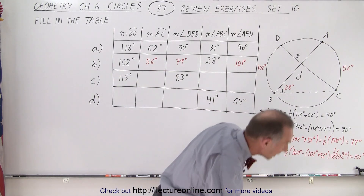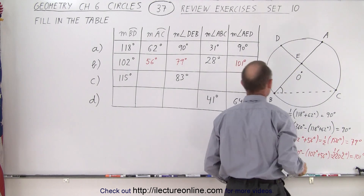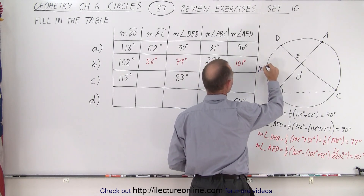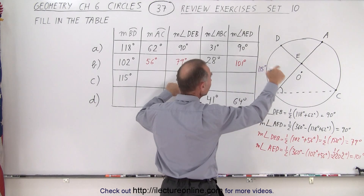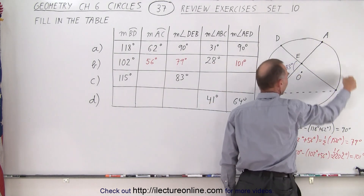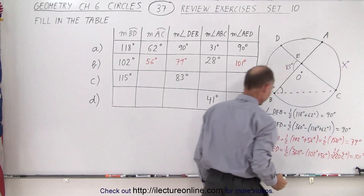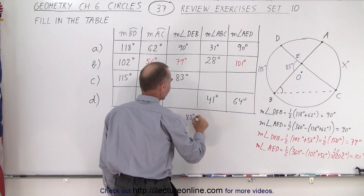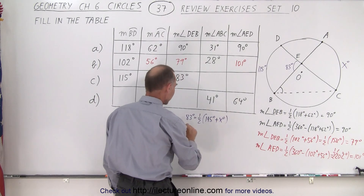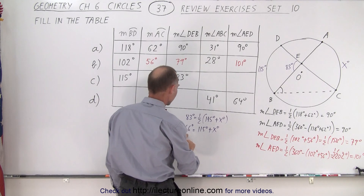Alright, we're done with Part B. Let's go to Part C, where they give us new information. This arc is 115 degrees and angle D-E-B is 83 degrees. We're supposed to find the arc from A to C — let's call it x degrees. We know that 83 degrees equals one half the sum of 115 degrees plus x degrees. Multiply both sides by 2: 166 degrees equals 115 plus x, so x equals 51 degrees.